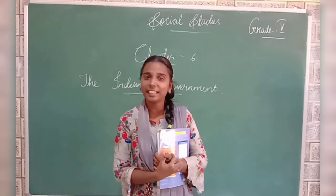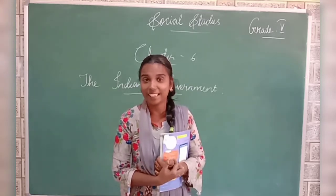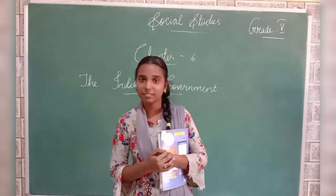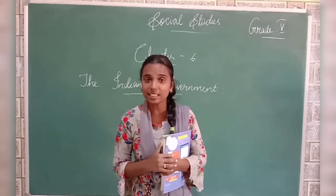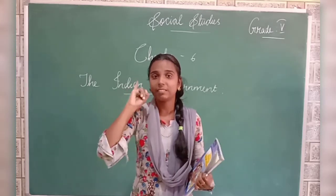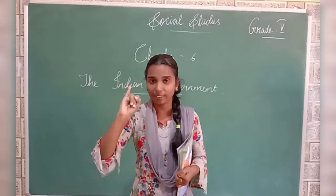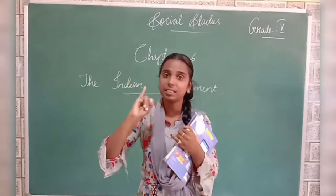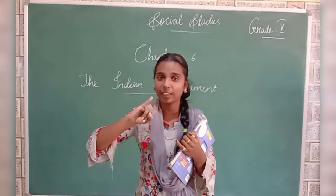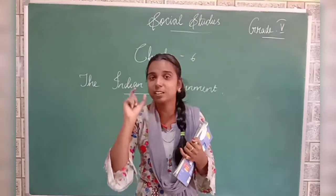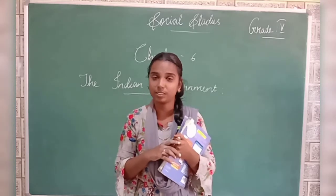Do you remember anything in social? In last year, we have learnt five lessons in social. Do you remember what are the things we have learnt in those five lessons? In the first lesson, we have learnt about the latitudes and longitudes. We have seen the definition of latitudes and longitudes and some of the important lines of latitudes and longitudes.